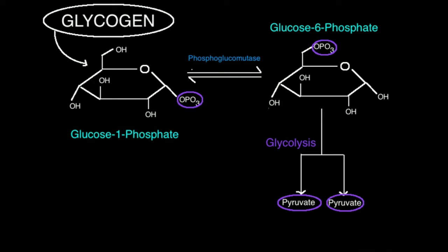That pyruvate goes into the TCA cycle in the mitochondria, and then those metabolites get shunted into the electron transport chain, and so on through the downstream metabolic pathways.